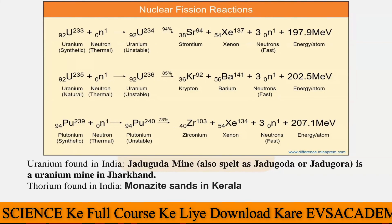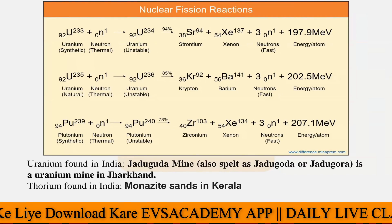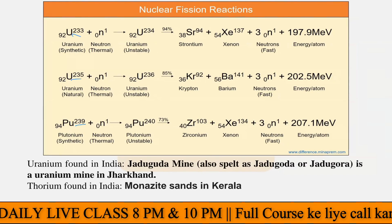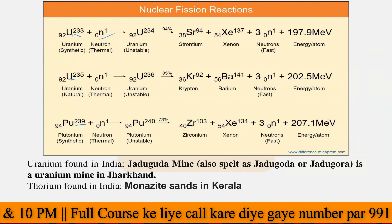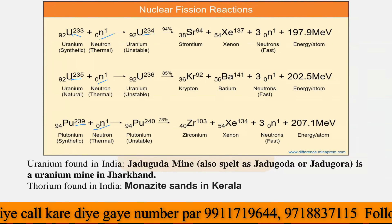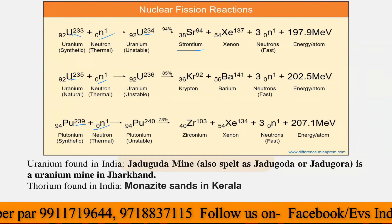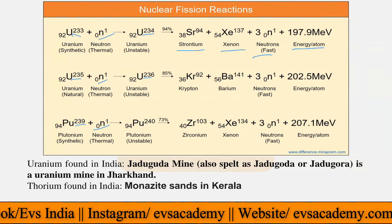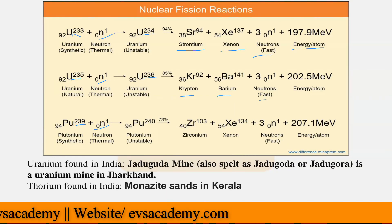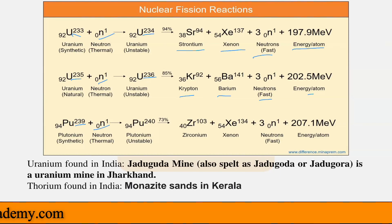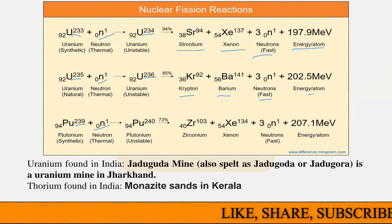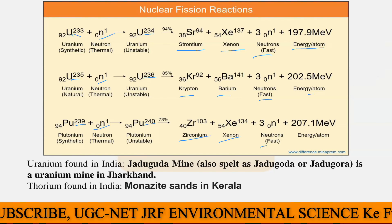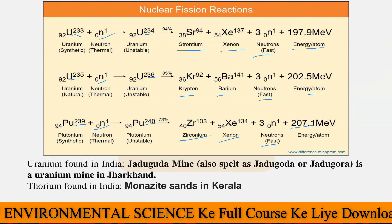There are three types of nuclear fission reactions corresponding to the three fissile species. Uranium-233 is converted to uranium-234, and 94% of that produces xenon, three neutrons, and 197.9 megaelectron volts of energy. Uranium-235 becomes uranium-236, and 85% converts to krypton and barium with three neutrons and 202.5 megaelectron volts. Plutonium-239 becomes 240, and 73% converts to zirconium, xenon, three neutrons, and 207.1 megaelectron volts per atom.